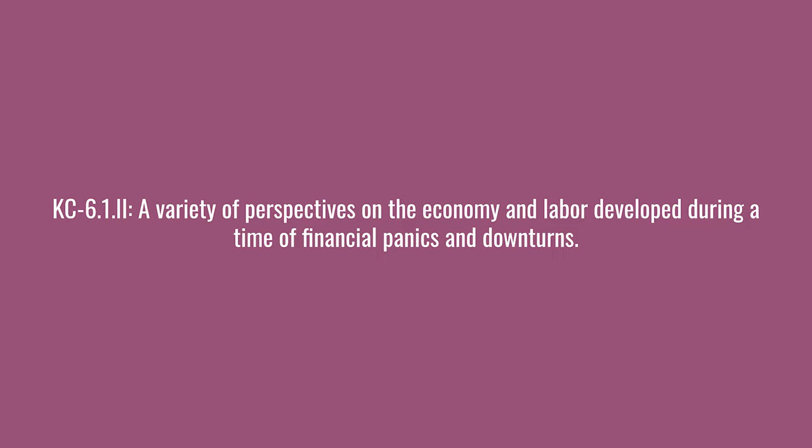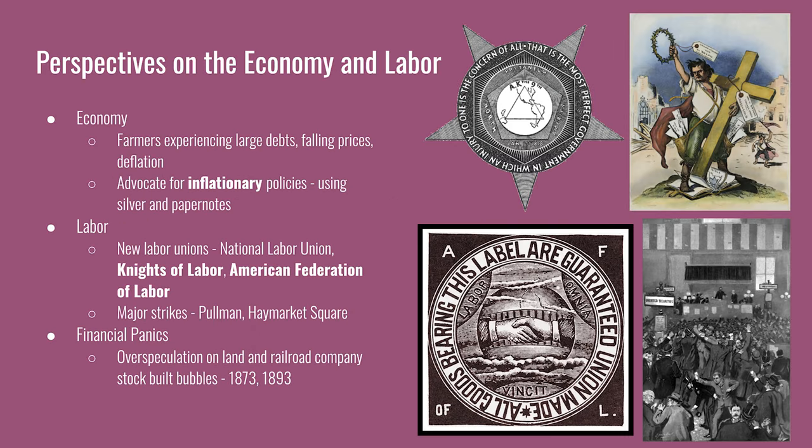The next key concept says a variety of perspectives on the economy and labor developed during a time of financial panics and downturns. The economy in the late 19th century generally benefited people in urban areas, primarily entrepreneurs and factory owners, though real wages for workers also increased. Farmers and people in rural areas were in the less desirable position. Farmers took on large debt to expand their acreage or update farm equipment, and technological improvements led to higher crop yields. With a higher supply of crops at market, prices fell, and farmers increasingly took on more debt.